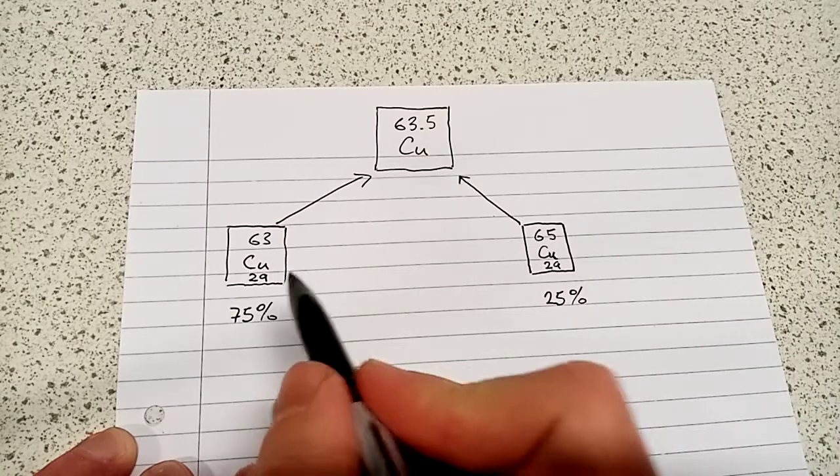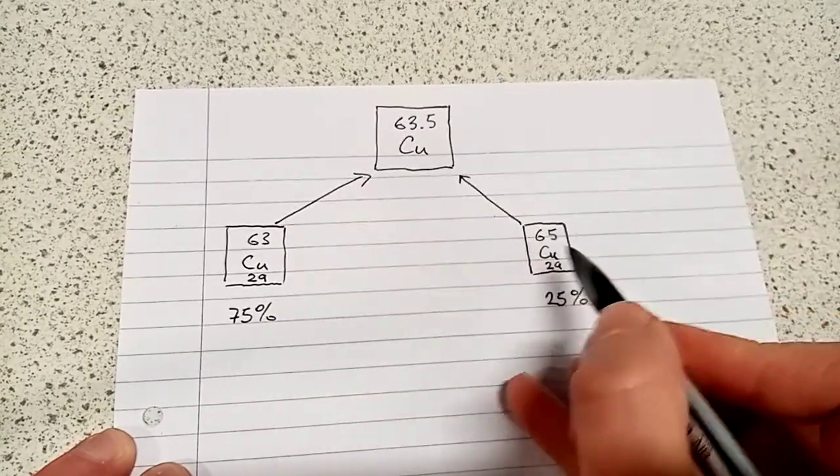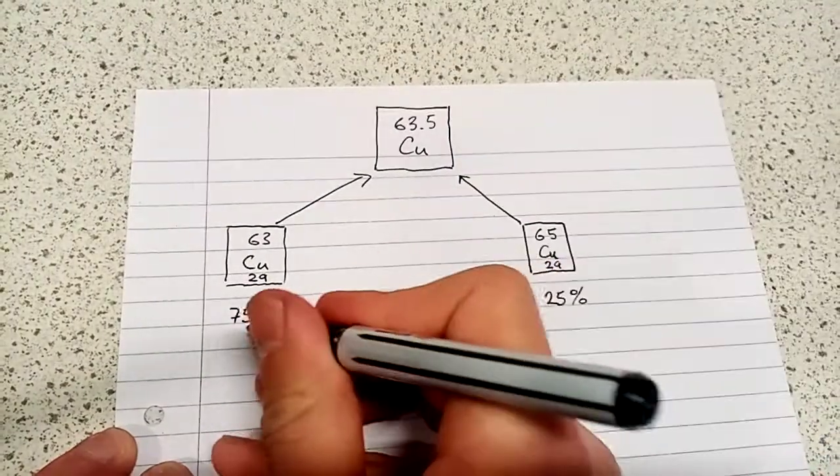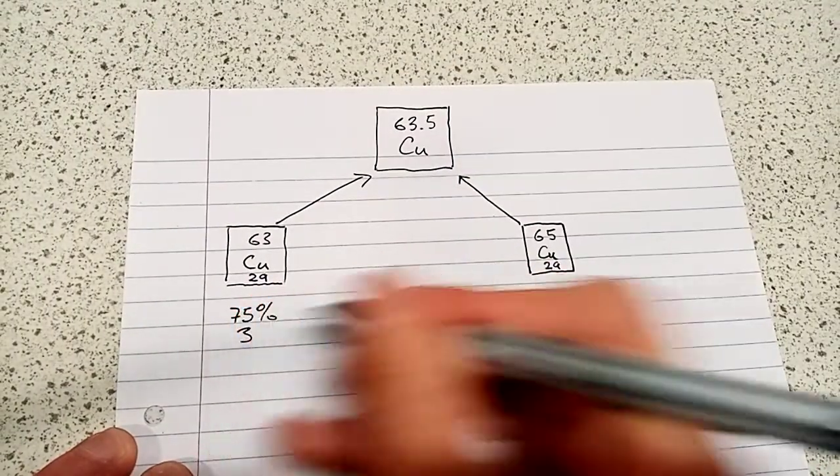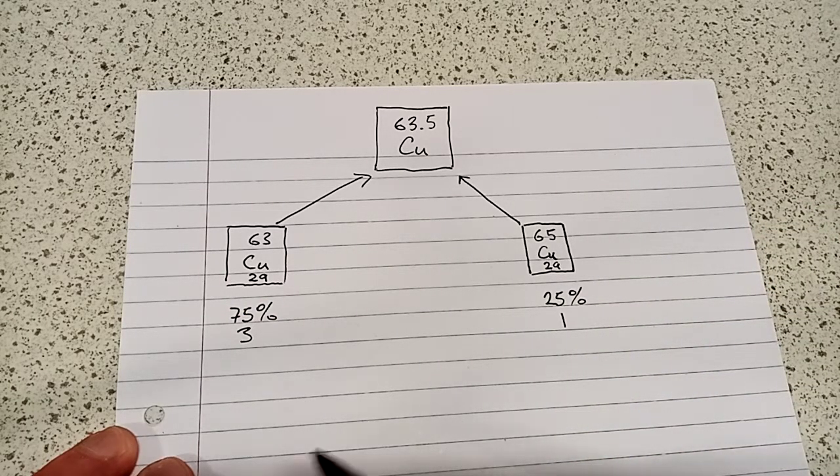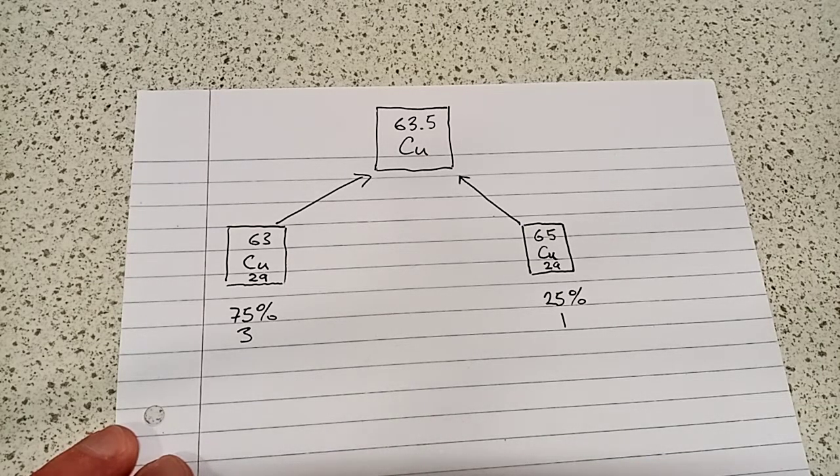So when we take into account the different abundance of these two isotopes, our average value becomes 63.5. So they're roughly in the proportion of 3 to 1. So what we have to remember is that the relative atomic mass is the average mass of all of the isotopes.